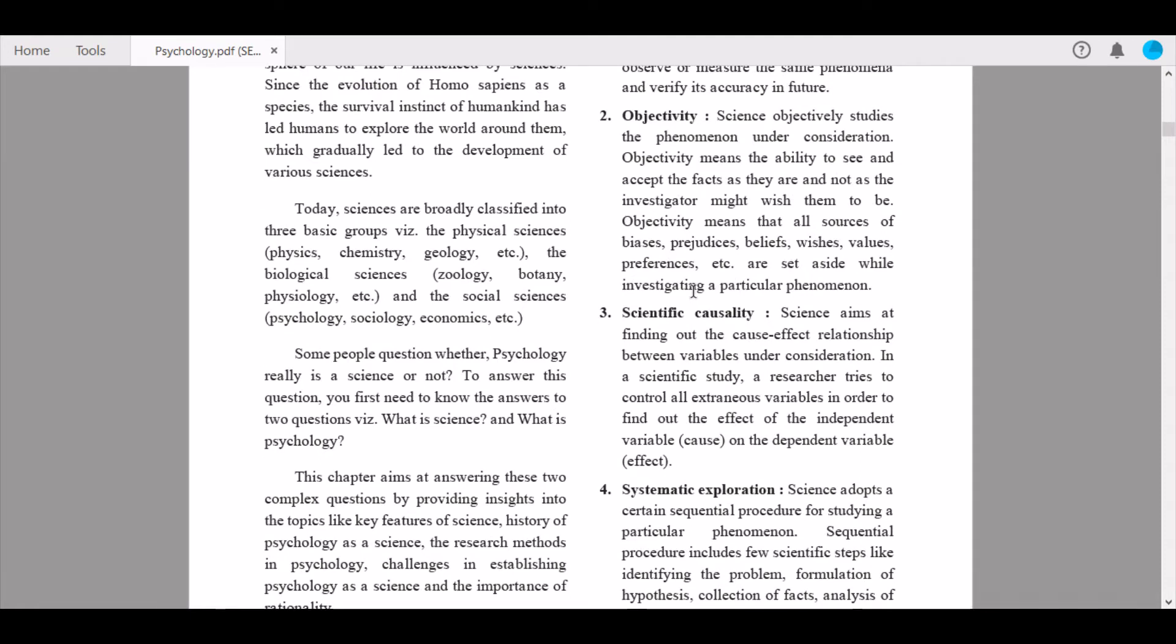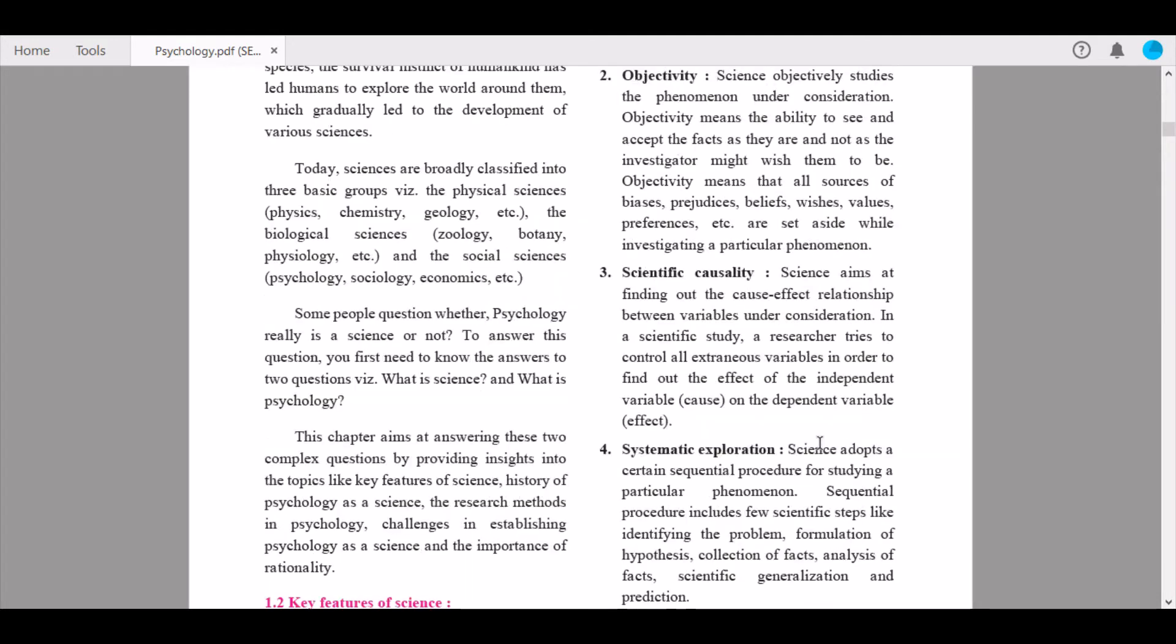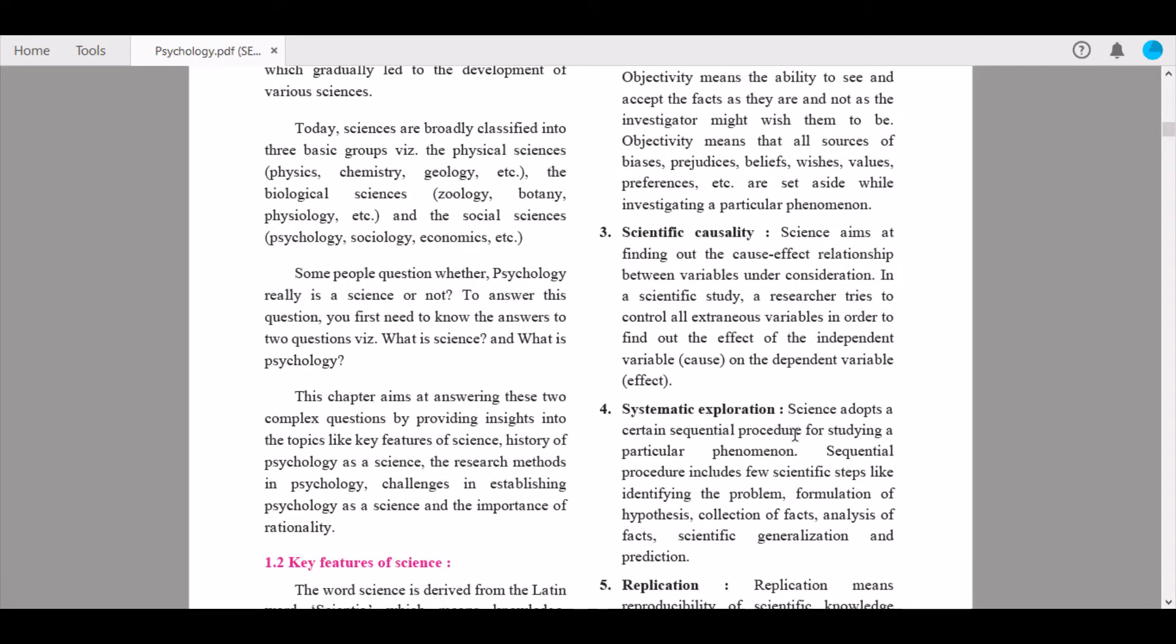Third is scientific causality. Science aims at finding out the cause-effect relationship between variables under consideration. In a scientific study, a researcher tries to control all extraneous, that is all external variables, in order to find out the effect of the independent variable on the dependent variable. This is a very interesting concept. Please read it thoroughly to get a better understanding.